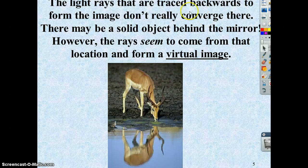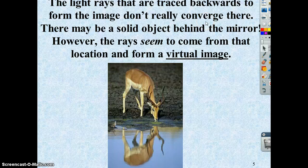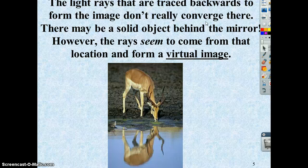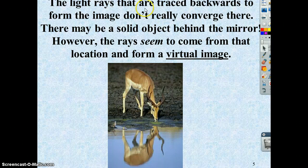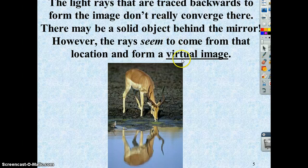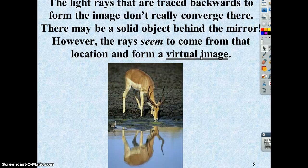Those light rays that we trace backwards, they don't really meet there, right? The light, if you were looking at light, it's not being, you wouldn't have a picture of the candlestick behind the mirror. So that is why this type of image is referred to as a virtual image, because the light doesn't actually meet there. It just appears to be coming from this location.